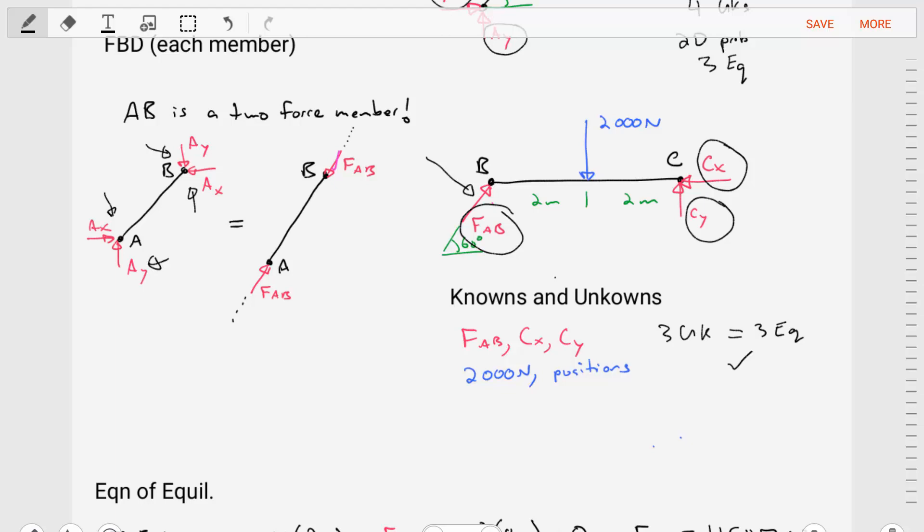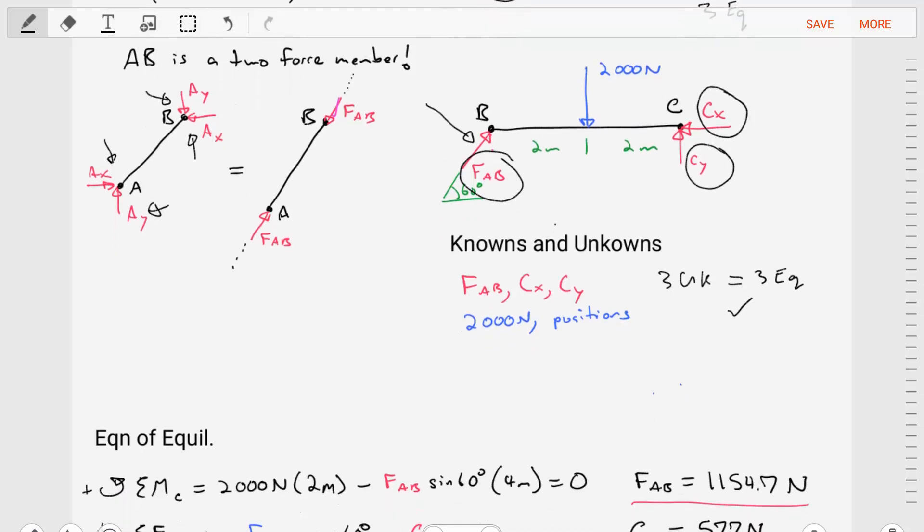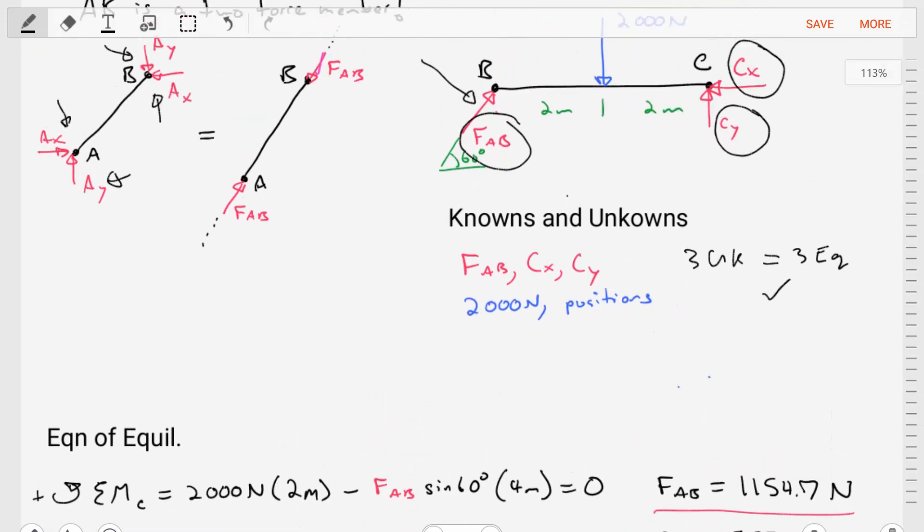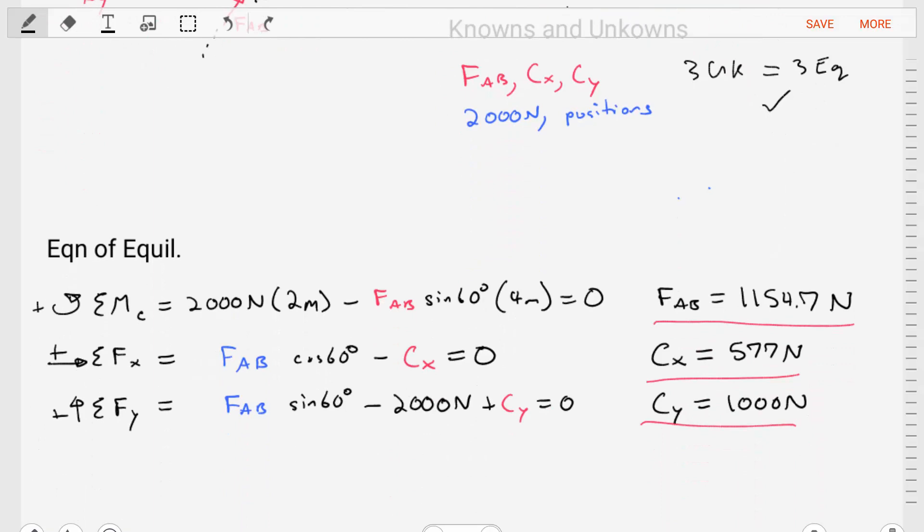Let's craft equations of equilibrium for this diagram. We'll do a sum of moments equation about point C, which will eliminate the most number of forces from the equation. We end up with only having one unknown in the equation, the force FAB. We find force FAB is 1,154.7 Newtons.